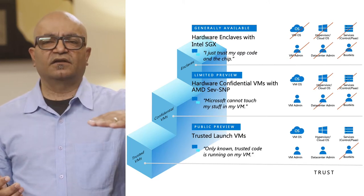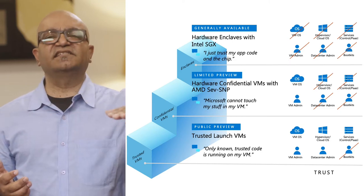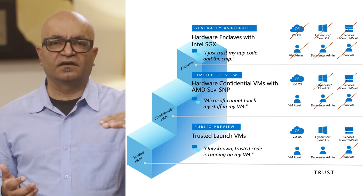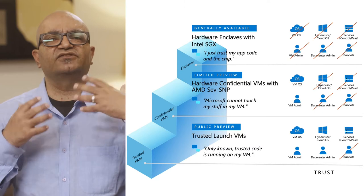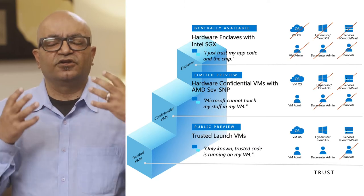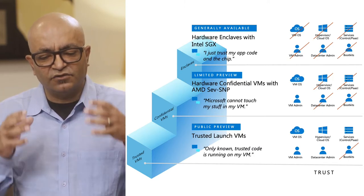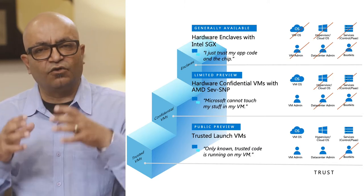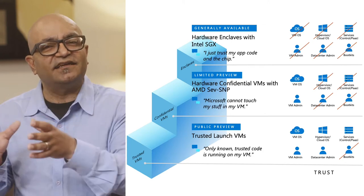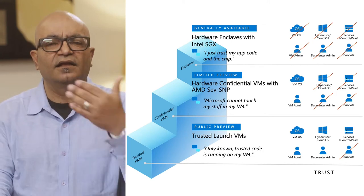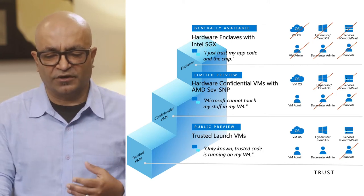The bottom-most rung of the ladder is the easiest button offering — trusted launch virtual machines. This lets you isolate your workload so that only known trusted code is running on your virtual machine, protecting you against rootkits and bootkits.